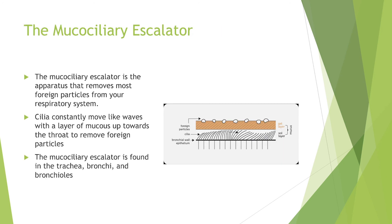The mucociliary escalator is one of the most advanced parts of your body. It is the apparatus that removes most foreign particles from your respiratory system using cilia — little hair-like arms that form a wave moving up toward your throat, carrying mucus. The reason we have mucus is so we can get rid of particles we breathe in — you may become more stuffed up when in contact with dust or different particulates, which is your body removing those particles. The mucociliary escalator is found in the trachea, bronchi, and bronchioles. The only place it cannot reach is the alveoli, which is where asbestos goes — and that's why your body cannot remove those fibers.